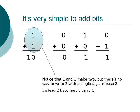Finally, it's very simple to add bits. 0 plus 0 is equal to 0. 1 plus 0 is equal to 1. And 0 plus 1 is equal to 1. But 1 plus 1 is equal to 1, 0. Notice that 1 and 1 make 2, but there's no way to write 2 with a single digit in base 2. Instead, 2 becomes 0, carry 1.